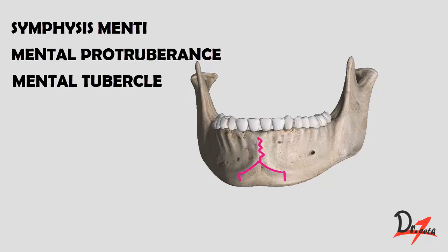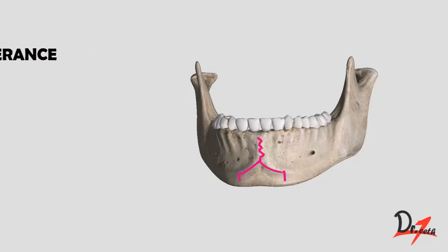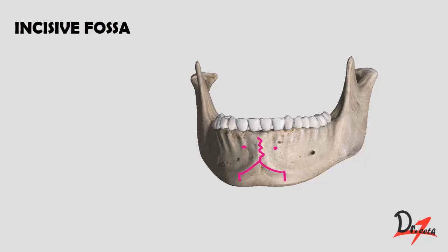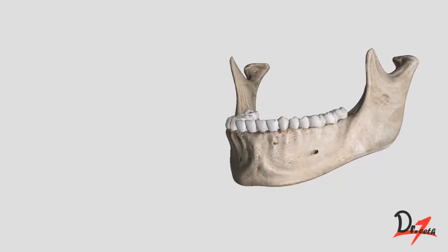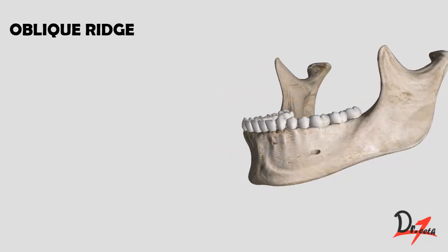The base of the mental protuberance is limited on each side by the mental tubercle. On either side of the upper end of the protuberance, below the incisor teeth, is the incisive fossa. A faint oblique ridge extends from each mental tubercle to the corresponding anterior border of the ramus, also called the oblique line.